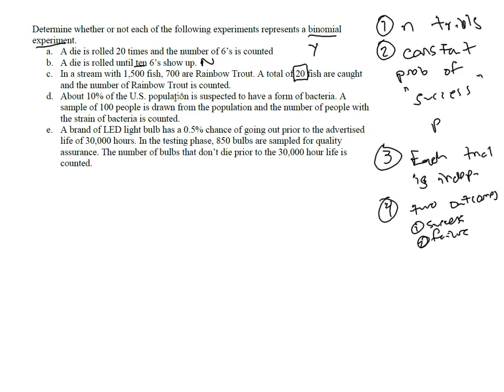because if you catch one rainbow trout, you don't have 700 out of 1,500 anymore. You have 699 out of 1,499. So your probability of success is not constant. This fails.